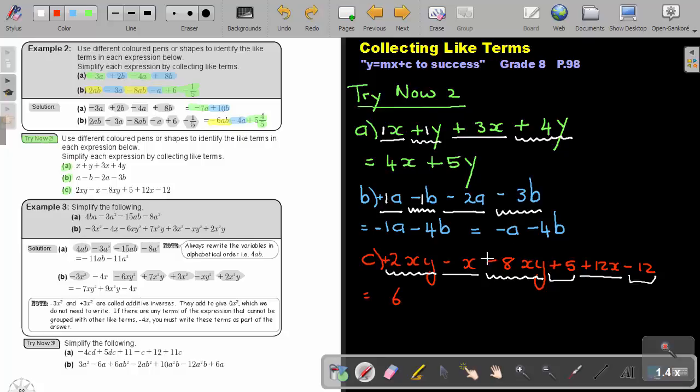So let's just add up my like terms. So what do I do if the signs are different? I subtract, so I get 6. The biggest movement was negative, so it's negative 6. And I just rewrite the variables.